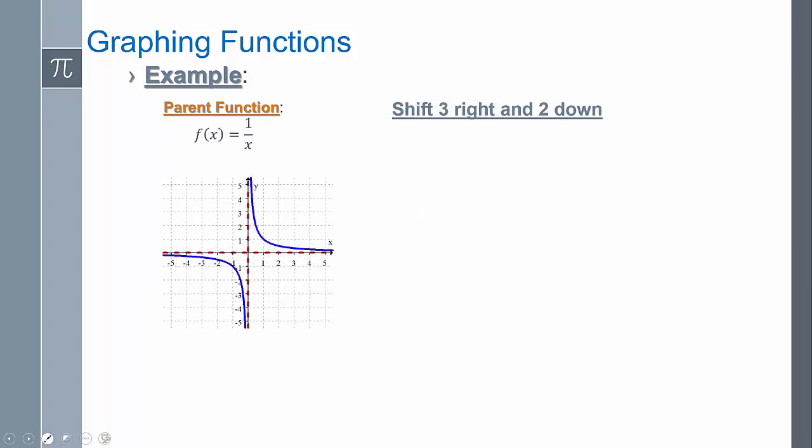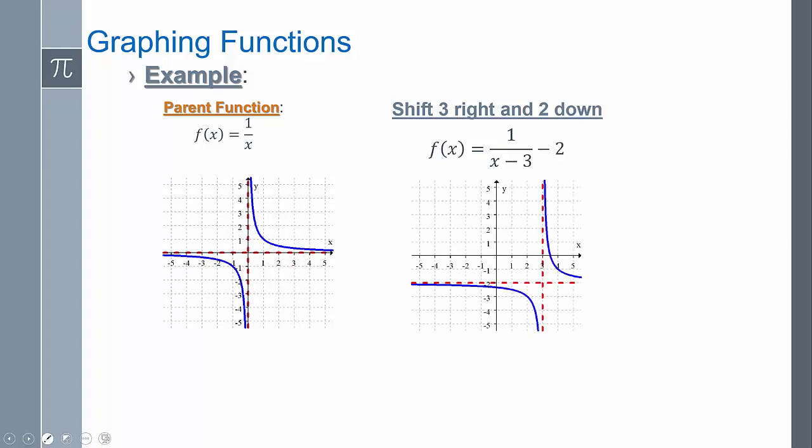My rational function, three to the right and two down. So remember the H is in the bottom here, and then there's my K. So this cross here is going to move three spaces over and two spaces down. So notice the crosshairs, three spaces over, two spaces down. And so then we have our function there.